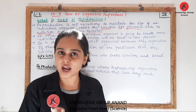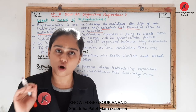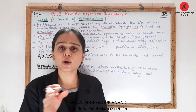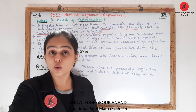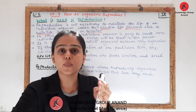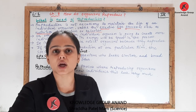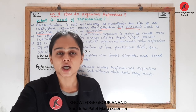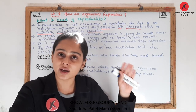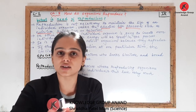What will happen if there is no reproduction? We very well know that no living organism will live forever — they are going to die. So if the human population decided not to reproduce, after some years, the human population becomes extinct.